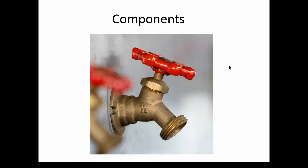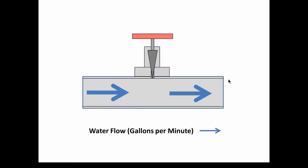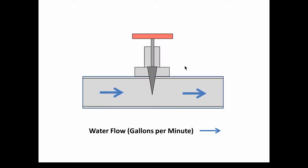This is a very useful analogy in the electrical world because there are components that operate very similarly to a water valve. Here is a diagram of a water valve — the red handle is on top, and the blue arrows depict the flow in gallons per minute through that pipe. You can see the valve is open and there's a lot of water flowing through. As we close the valve, you can see it begins to block the flow until it's totally closed and there's no water flowing.